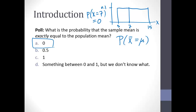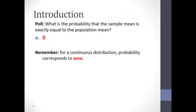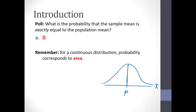In notation, the probability that the sample mean x-bar is exactly equal to mu — which is just a single number — is going to be zero, just like before. That's a very weird thing and hard to grasp, but it is true. When we have a continuous distribution, probability corresponds to area. So the area above that single point on the normal curve is zero.